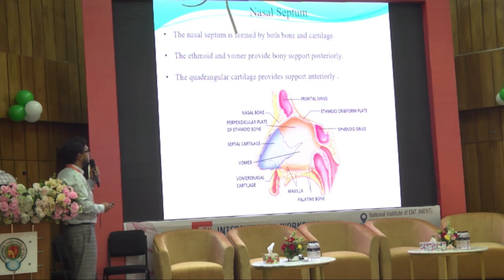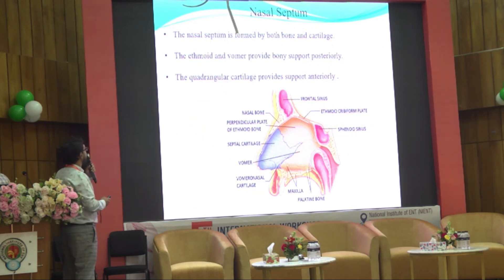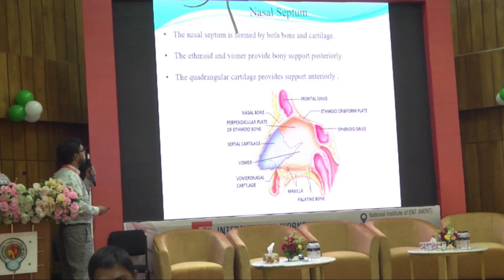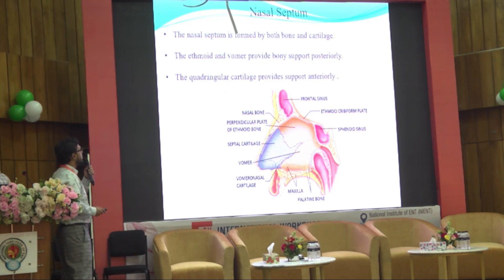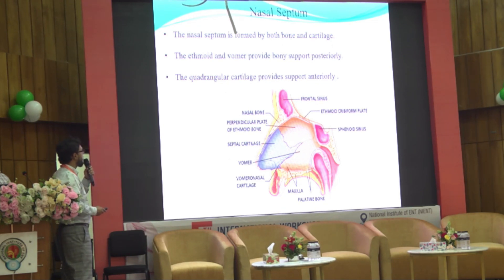The nasal septum is formed by both bone and cartilage. The ethmoid and vomer provide bony support posteriorly, while the quadrangular cartilage provides support anteriorly.